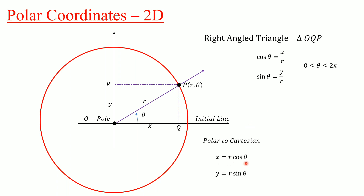Therefore x equals R cos theta and y equals R sin theta. Using this relation we can convert polar coordinates to Cartesian coordinates.